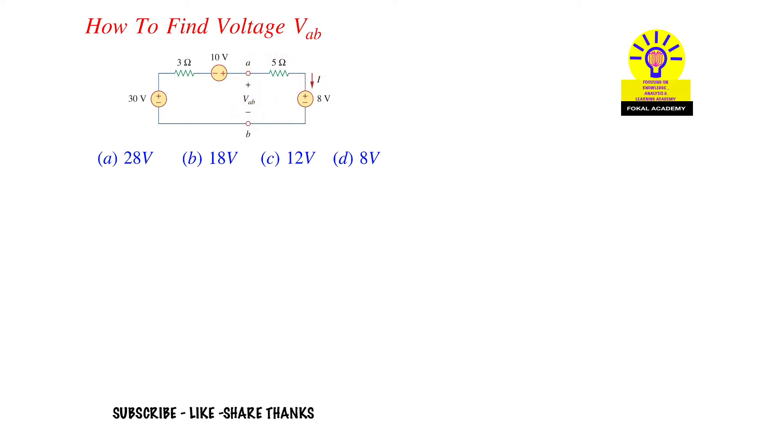So for that we are going to apply KVL. The current direction was given here in this direction, so the current I should be like this. Now write the KVL equation. According to KVL, sum of all voltages equal to zero.